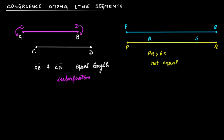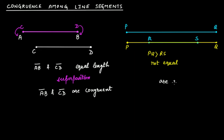So in this case, line segment AB and line segment CD are congruent, but in this case they are not. It means that if you have to write in mathematical terms, you will say AB is congruent to CD line segment.